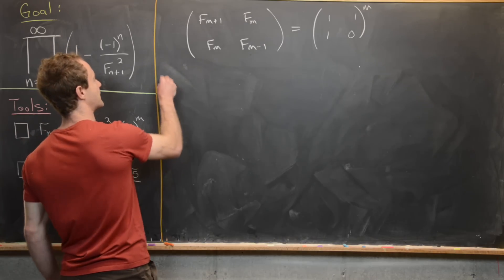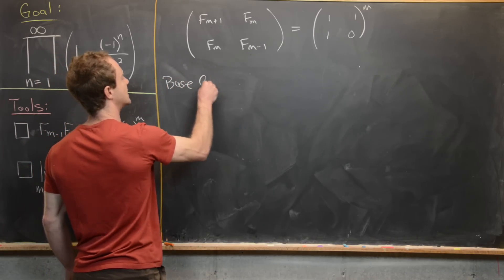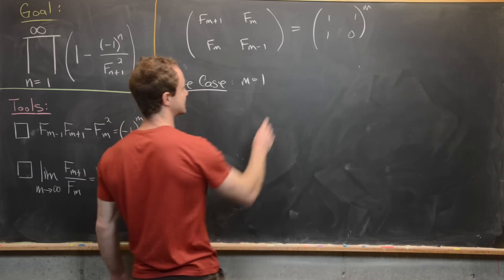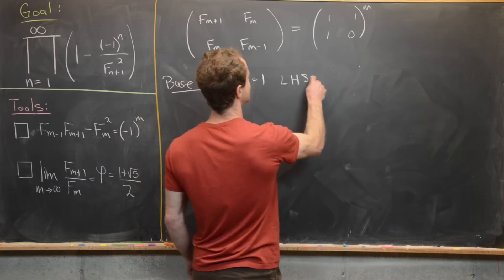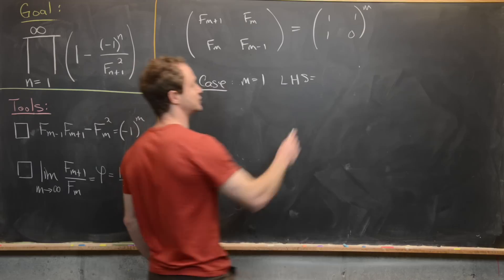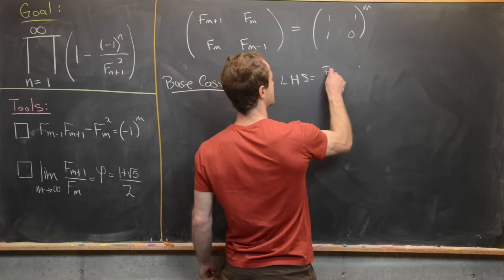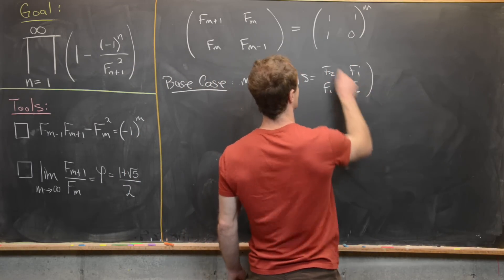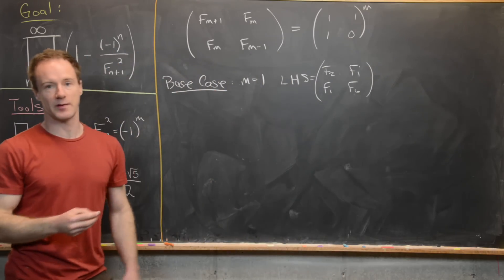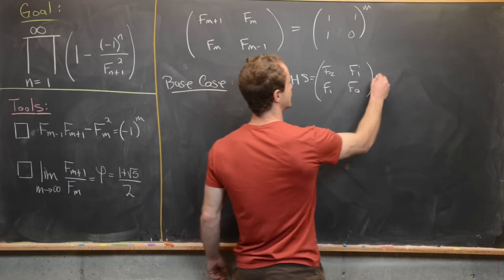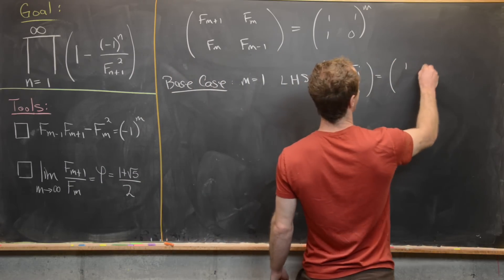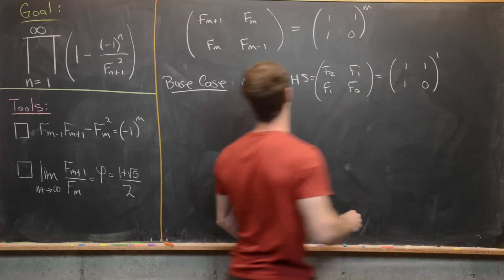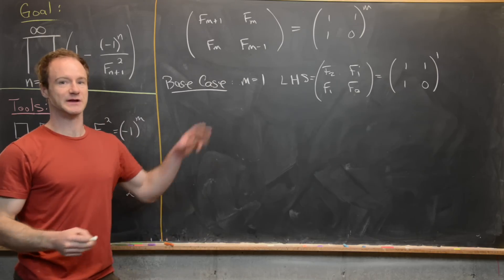Let's prove this by induction. For the base case m equals 1, the left-hand side is the matrix with F_2, F_1, F_1, F_0, where the 0th Fibonacci number is 0. That is exactly equal to [[1,1],[1,0]] to the first power, which is what we want.